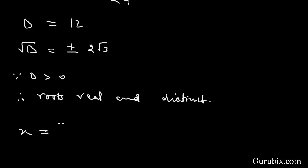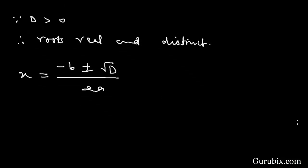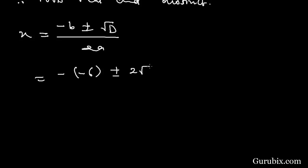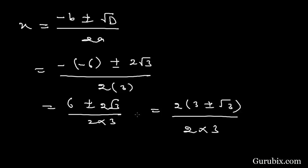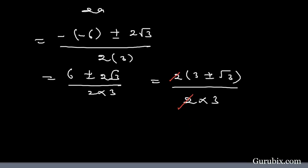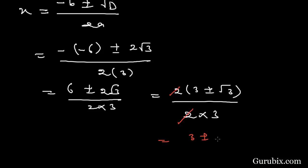Now we shall find the roots using the quadratic formula: x equals minus b plus or minus square root of D over 2a. Here, minus b is minus of minus 6, the square root of D is 2 root 3, and 2a is 2 times 3. This simplifies to 6 plus or minus 2 root 3 over 6. Taking 2 common from the numerator and cancelling with the denominator, we get 3 plus or minus square root of 3, all over 3. These are the two roots of the given quadratic equation. This is the solution of the whole example.